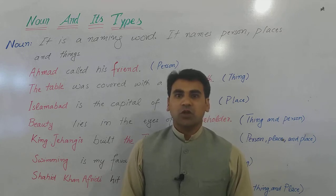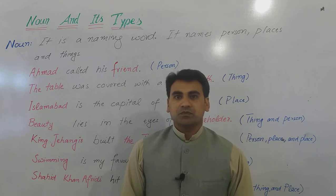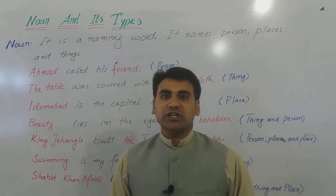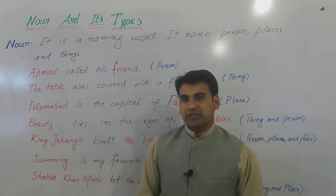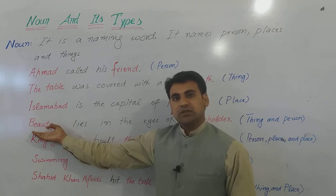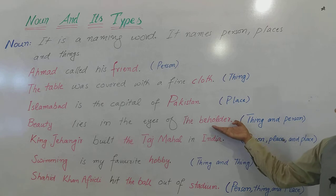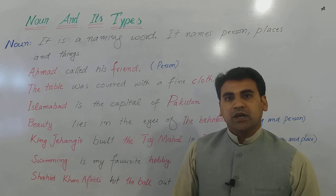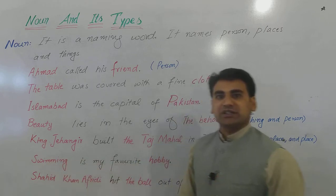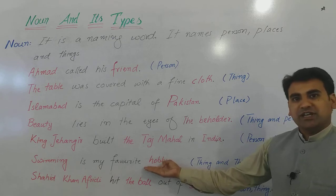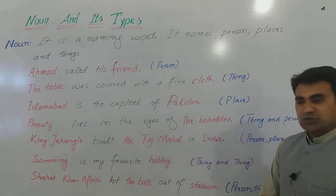So those things which we can perceive with our senses are concrete nouns. Abstract nouns are like beauty — khubsurti. Beauty is something that we can think of, we can imagine, we can feel; it is an emotion.